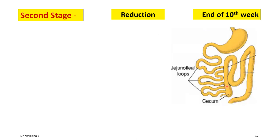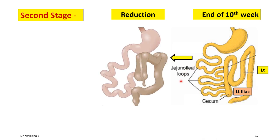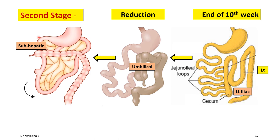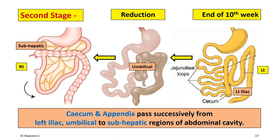As the cecal bud is last to re-enter the abdominal cavity, it initially occupies the left iliac region. Once it starts rotating towards the right side, it moves into the umbilical region, from there to the sub-hepatic region towards the right side. By the end of the second stage, the cecum and appendix pass successively from the left iliac to umbilical, and from there to the sub-hepatic region of the abdominal cavity after completing 180 degrees of rotation towards the right side.